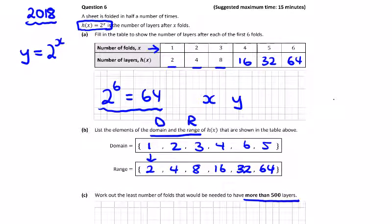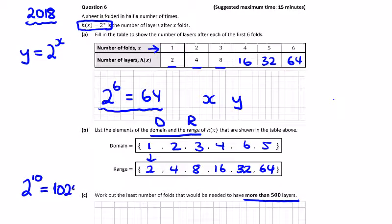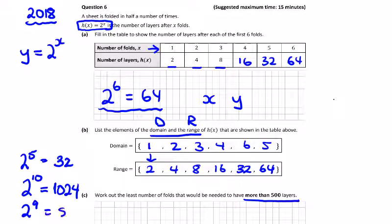You could use trial and error on your calculator. The ones to remember are 2 to the power of 10, which is 1024, and 2 to the power of 5, which is 32. If you remember these two, you can work your way up or down. So 2 to the power of 9 would be 512, therefore we will have 9 folds.